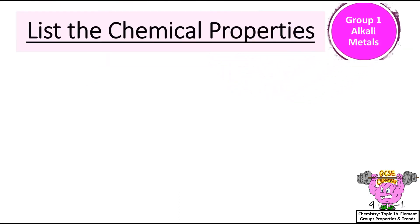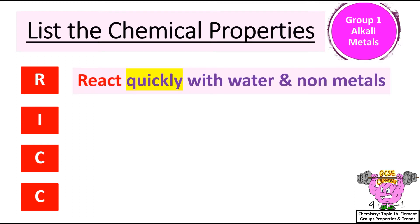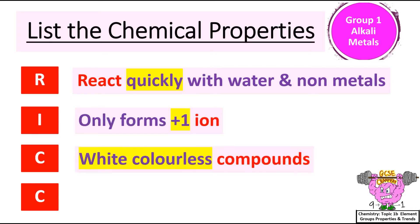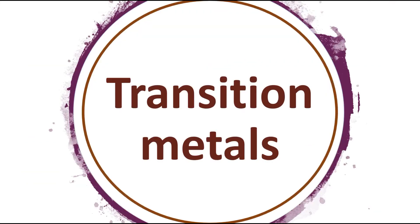List the chemical properties of Group 1 Alkali Metal Elements. I remember these by using the acronym RICC: R for react, I for ions, C for compounds, and C for catalyst. Alkali metals react quickly with water and non-metals, only form plus one ion, form white colourless compounds, and they're not used as a catalyst.